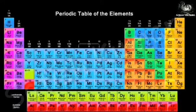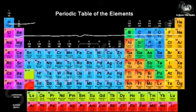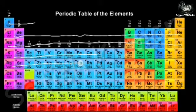The modern periodic table contains 18 groups and 7 periods. The horizontal rows are called periods — periods 1, 2, 3, 4, 5, 6, and 7. These are the 7 periods in the modern periodic table.